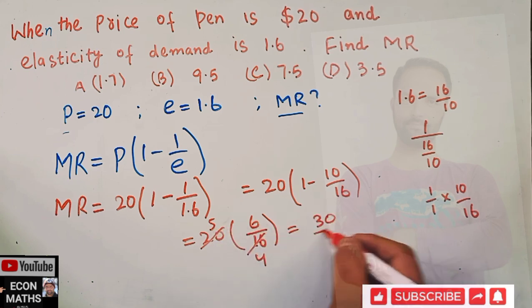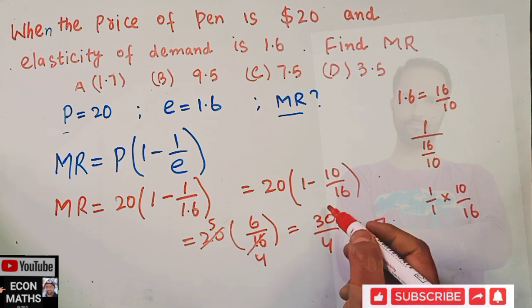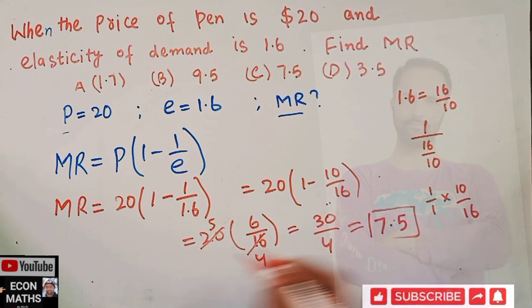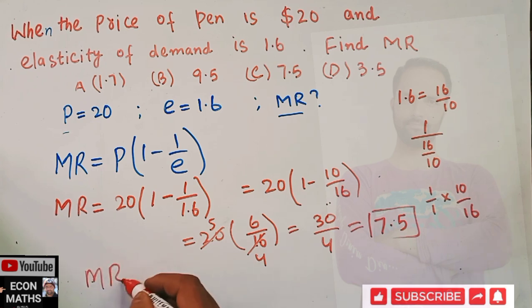We have 5 times 6 is 30 upon 4. So 4 times 7 is 28, 4 times 5 is 20. That means our marginal revenue is equal to 7.5.